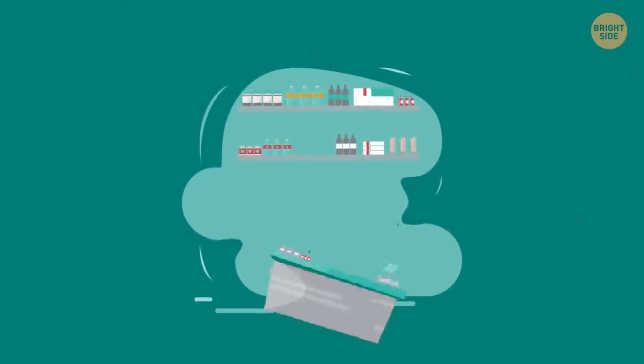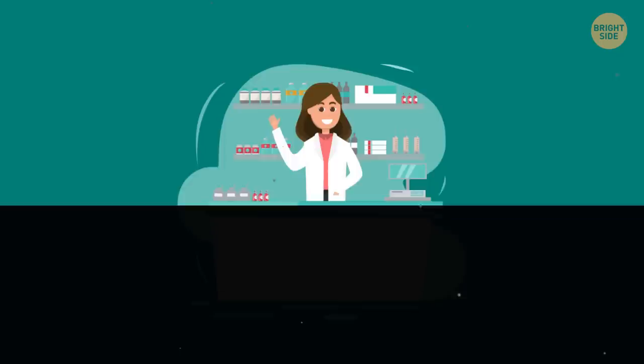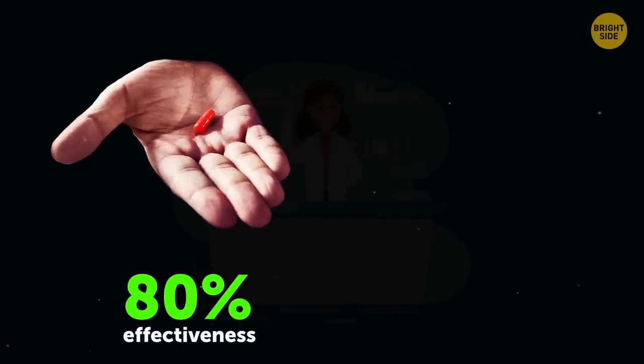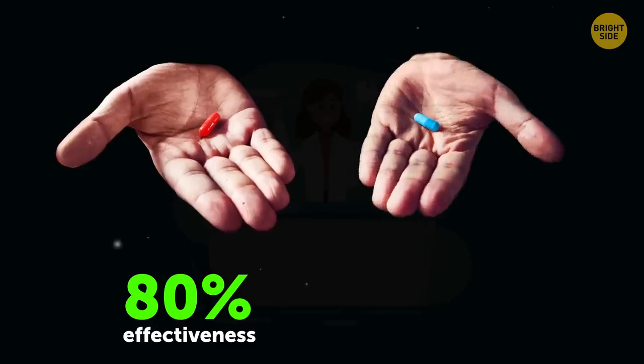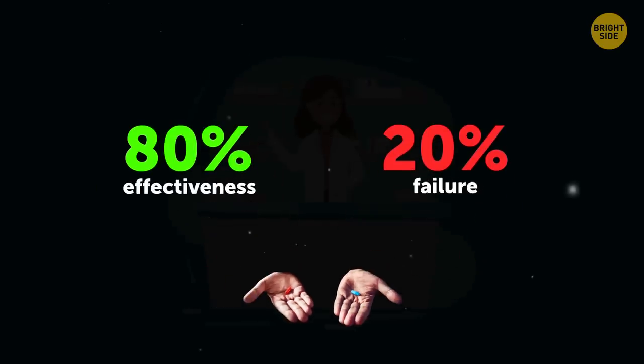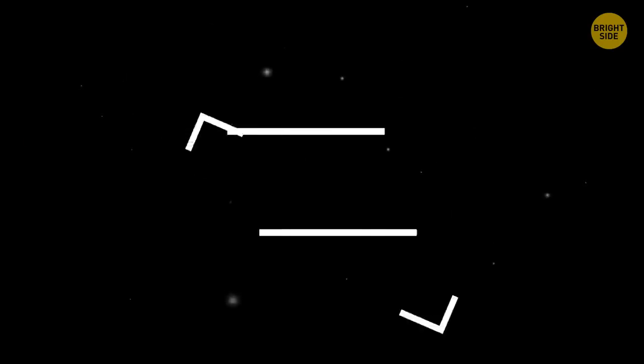Number 4. Framing effect. Imagine you're presented with the choice of two medical treatments for some disease. Let's not go into particulars here. The package insert for the first one says it has 80% effectiveness against the disease, while the second one is described as having 20% chance of failure. If you look closely at both of them, you'll easily see that they're absolutely similar. Like, the same even. But according to statistics, the vast majority of people would choose the first treatment over the second.